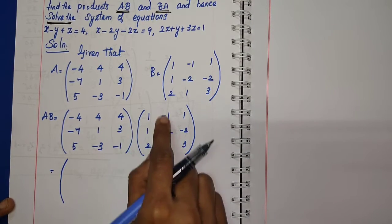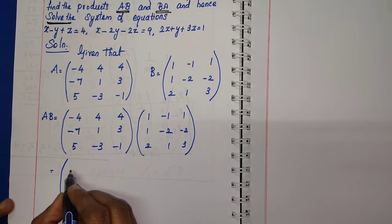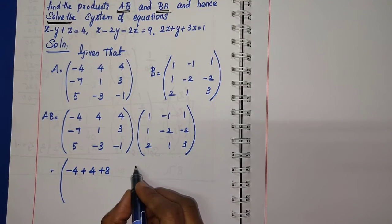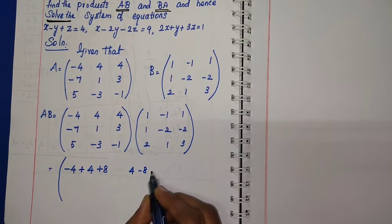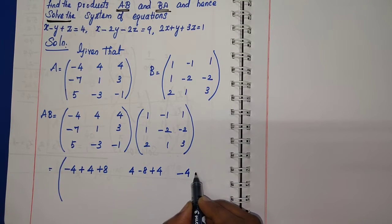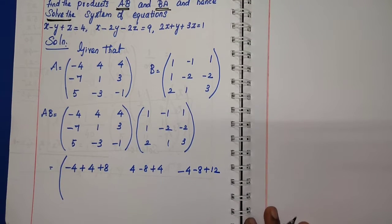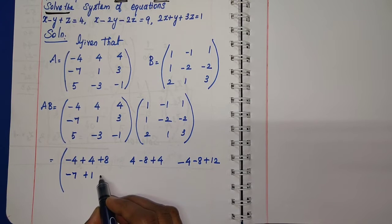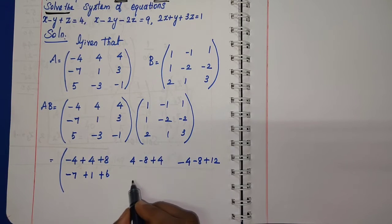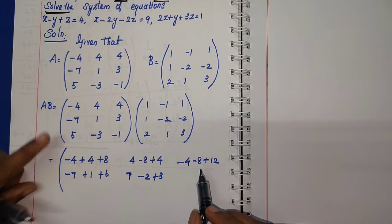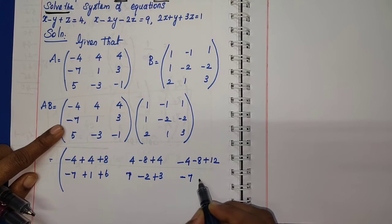First row, first column: minus 4 plus 4 plus 8. First row, second column: plus 4 minus 8 plus 4. First row, third column: minus 4 minus 8 plus 12. Second row, first column: minus 7 plus 1 plus 6. Second row, second column: plus 7 minus 2 plus 3.